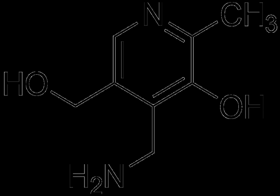In 1934, the Hungarian physician Paul György discovered a substance that was able to cure a skin disease in rats, and he named this substance vitamin B6. In 1938, Samuel Lepkovsky isolated vitamin B6 from rice bran. Harris and Folkers in 1939 determined the structure of pyridoxine, and in 1945 Snell was able to show the two forms of vitamin B6, pyridoxal and pyridoxamine. Vitamin B6 was named pyridoxine to indicate its structural homology to pyridine.